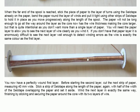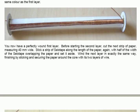The paper will not be long enough to go all the way around the coil winding as it is shown. This is quite intentional, because you don't want more than a single layer of paper, because all that does is make the coil thicker, and requires more wire for the same number of turns. You will need the paper layer to allow you to see the next layer of wire clearly as you wind it. If you don't have that paper layer, it is enormously difficult to see the next layer well enough to detect winding errors, as the wire you are winding with is exactly the same colour as the first layer, because the first layer is made of it. You now have a perfectly wound first layer.